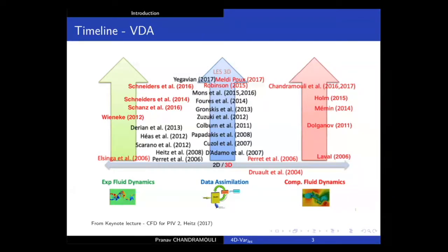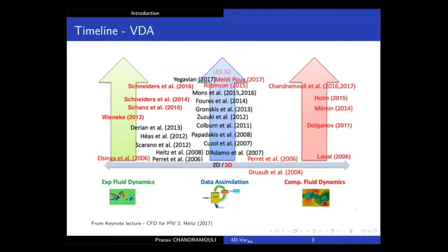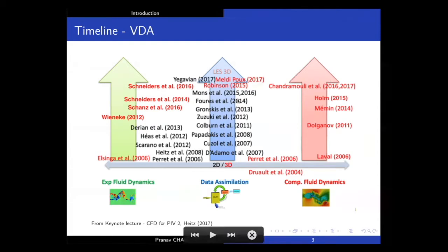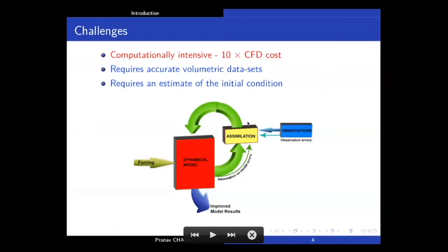This is a graph presented by Dr. Dominic Heights at the keynote lecture for CFD for PIB2. It maps recent publications in experimental fluid dynamics on the left, computational fluid dynamics on the right, and data assimilation in the middle. In red are publications focused on flows in 3D, and in black those focused on 2D. As you can see, in both individual methods almost all studies are focused on 3D cases, but in data assimilation they are quite limited and mostly 2D. We had some recent publications by Mel D and Poo in 2017 focused on 3D assimilations.